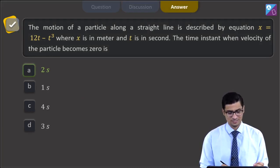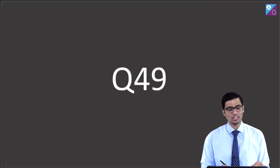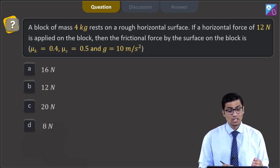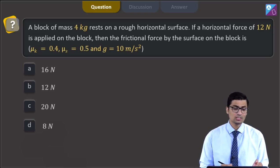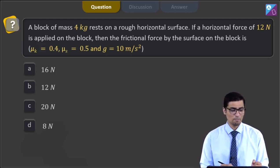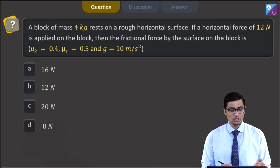Now let us proceed to the next question. This is question 49. The question states, a block of mass 4 kg rests on a rough horizontal surface. If a horizontal force of 12 N is applied on the block, then the frictional force by the surface on the block is. It is given that mu k is equal to 0.4, mu s is equal to 0.5 and g is equal to 10 meter per second square. The options are 16 N, 12 N, 20 N and 8 N.